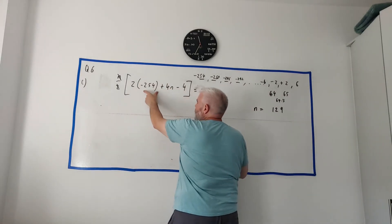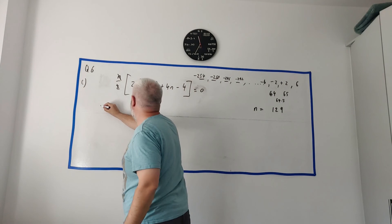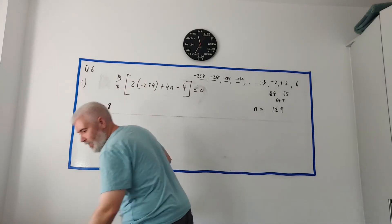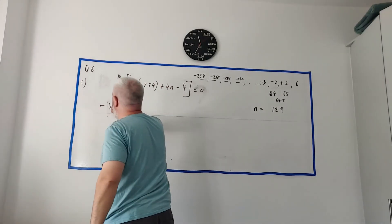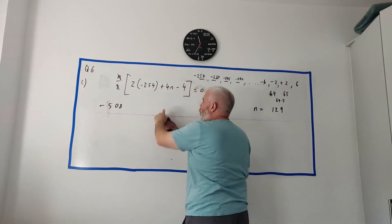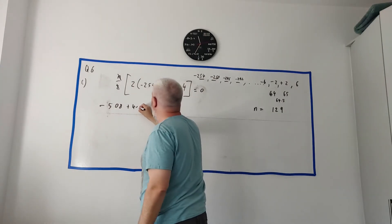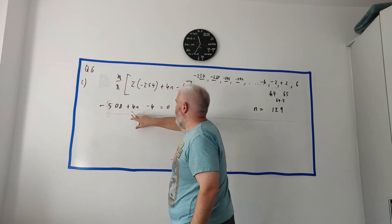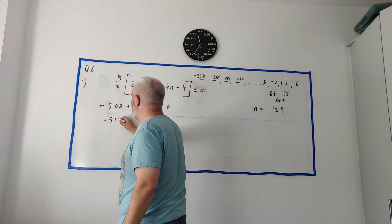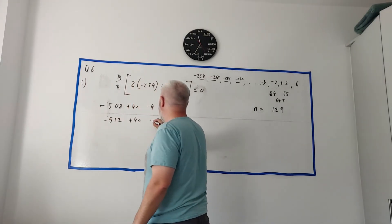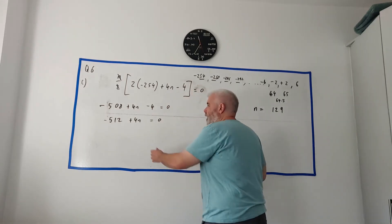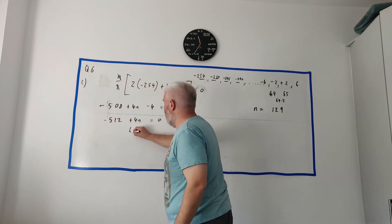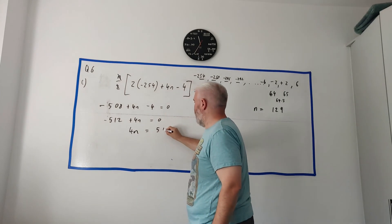It is minus, use a calculator if you're not good at these sums in your head, minus 508 plus 4n minus 4 equals 0. Minus 508 minus 4 is minus 512 plus 4n equals 0. Add this number to both sides. Add 512 to both sides. We get 0 there. 4n equals 512.